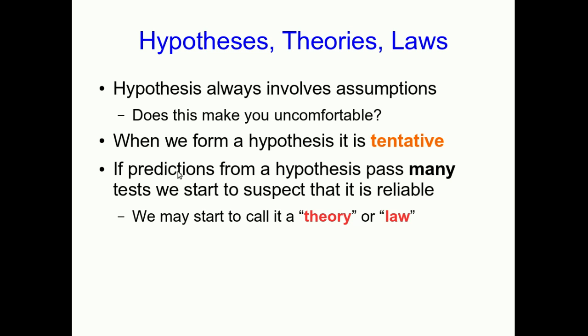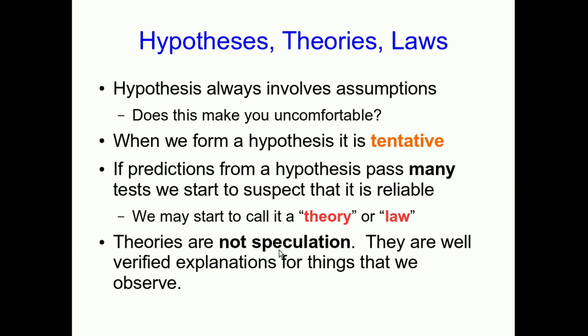Now, if predictions from a hypothesis do really well, if they pass many, many tests, and we start to suspect that we can rely on this hypothesis, we may start to call it a theory or a law. And I'll warn you, the distinction between a theory and a law is subtle, and not even all scientists use the two words in the same way, so I wouldn't get hung up on them. But the important thing is that in everyday language, we often use the word theory to mean something kind of like a guess. But it's exactly the opposite in science. A theory is not speculation. It's not a guess. It's an explanation for things, a hypothesis, which has passed many, many tests, so that we think that it's a useful model of reality.